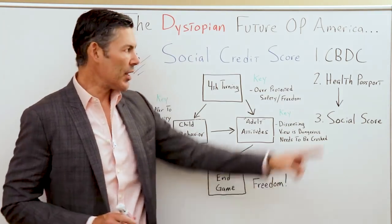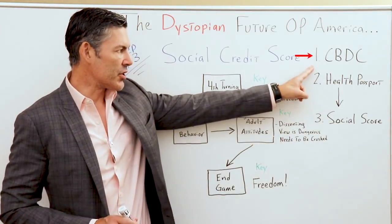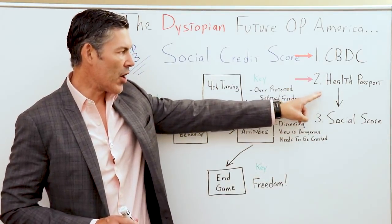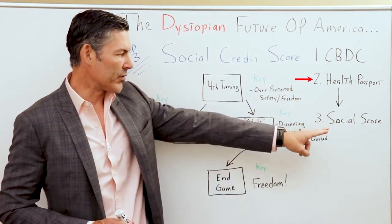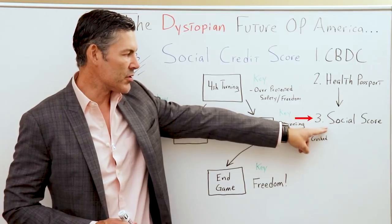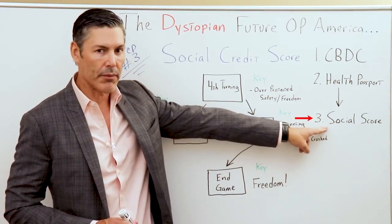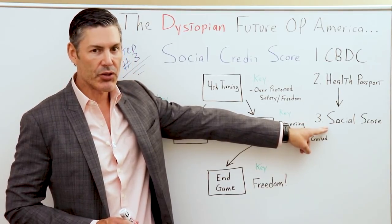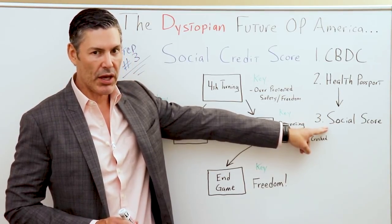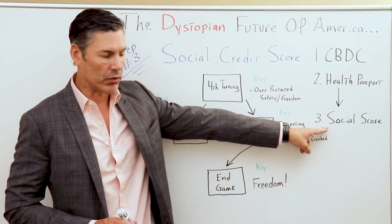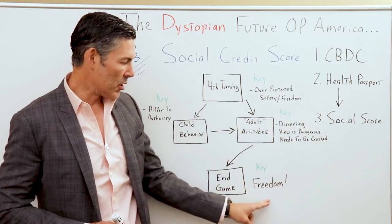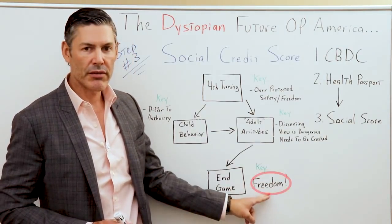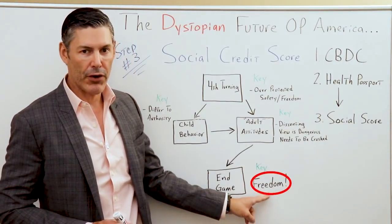So if we get a central bank digital currency, health passports, and this social score, it boils down to one thing and one thing only: a loss of freedom.